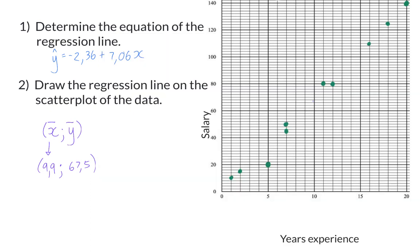So when plotting the coordinates for this regression line, the first one will be 9 comma 9 and 67 comma 5.